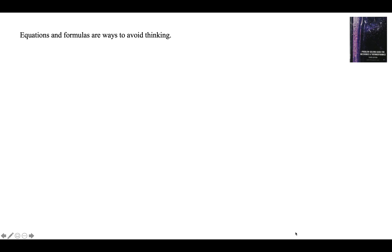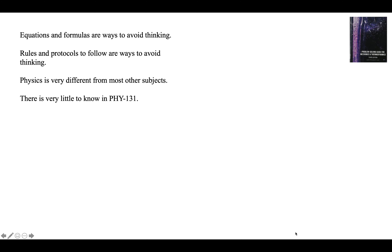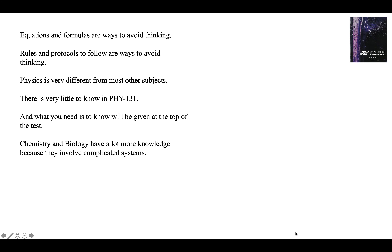Equations and formulas are ways to avoid thinking — if I have a formula I can stop thinking and just plug the numbers in. Rules and protocols are ways to avoid thinking; rules and protocols are for people that cannot think. That's what a computer does — if-then statements. Physics is very different from most other subjects because there's very little to know, and what you need to know is going to be at the top of the test.